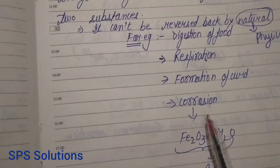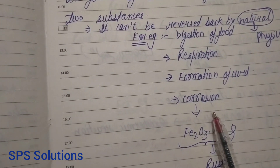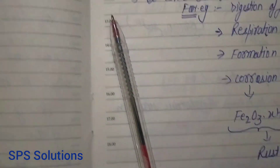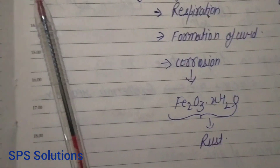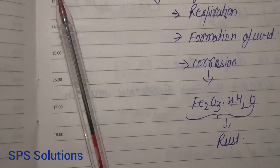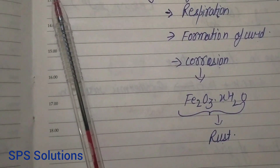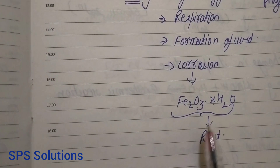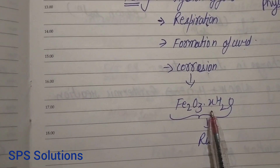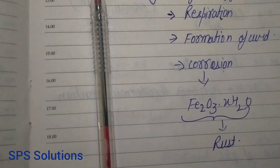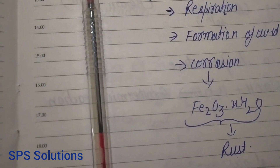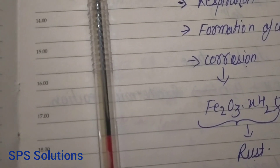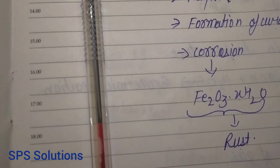The third example is formation of curd. The fourth example is corrosion, which you are very familiar with. Corrosion is the breakdown of any metal in the presence of air and moisture, or in the presence of certain corrosive chemicals. In lower classes, we discussed corrosion for iron, which is called rust, and the formula of rust is Fe2O3·XH2O. Here, X is the number of water molecules, which varies in every case — sometimes more water molecules are available, sometimes fewer — so X varies in every condition.